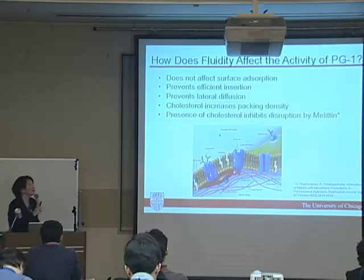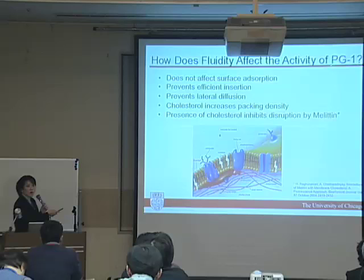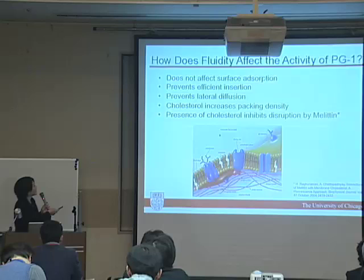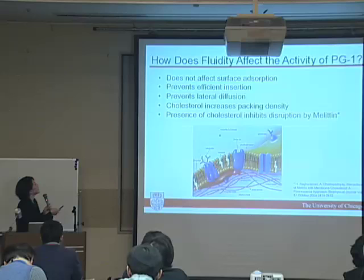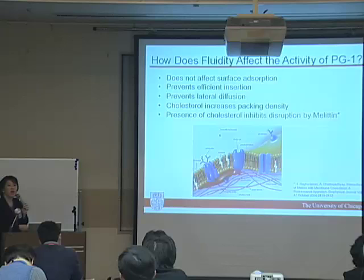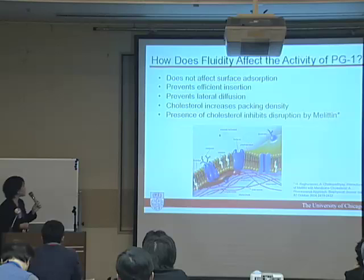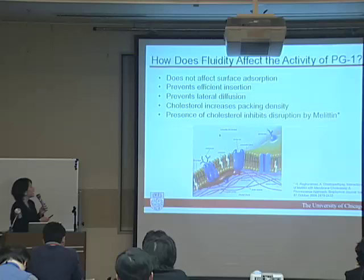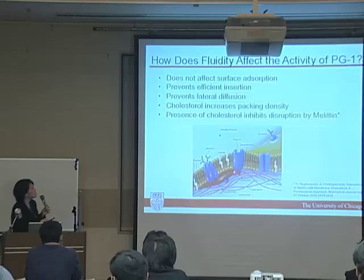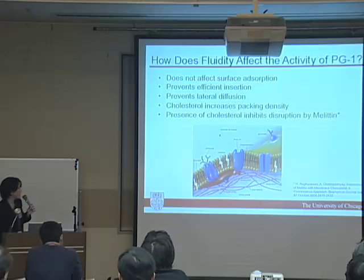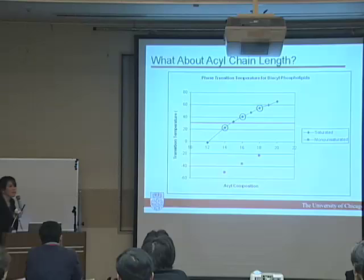So how does fluidity actually affect the activity of PG1? We know that the fluidity by itself does not affect the surface adsorption, because that's the job of the charge of the lipid and the charge of the peptide. However, the lack of fluidity prevents the efficient insertion of the antimicrobial peptide into the lipid system. It also prevents the lateral diffusion, making it harder for them to form pore formation. In fact, one of the strategies that bacteria use to inhibit the disruption of the antimicrobial peptide is to add sterol into the system, for example by things like carotenoids. So if that is the case, let's examine what is the effect of chain length on the system.